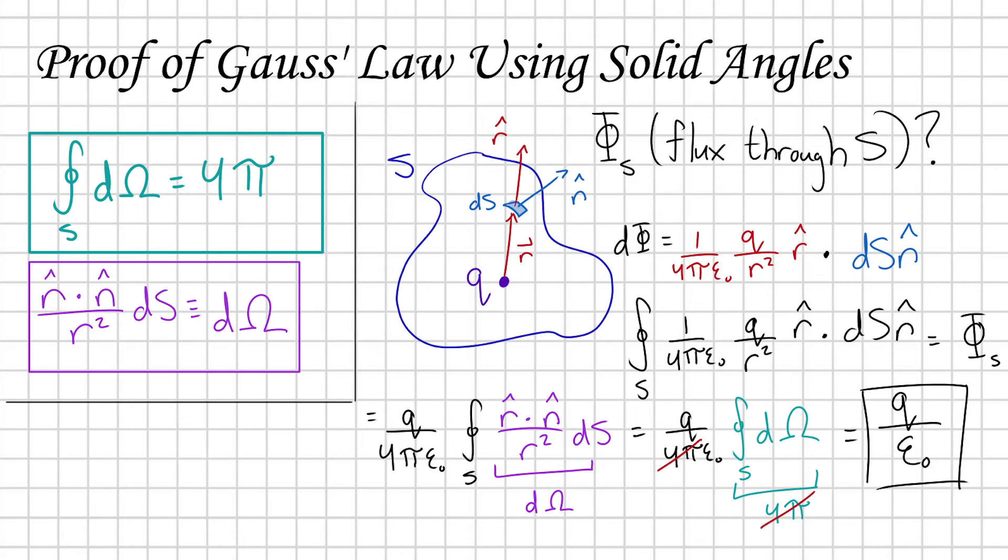regardless of its shape, the flux through that surface is always going to be equal to Q over ε₀.